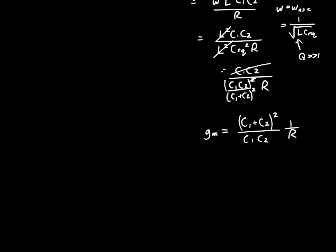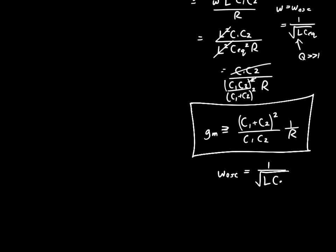But that is our final result. That and omega oscillation is 1 over the square root of L times CEQ, where CEQ is C1 C2 over C1 plus C2. And that concludes the analysis of the Colpitts oscillator. I hope you enjoyed the video. Thanks.